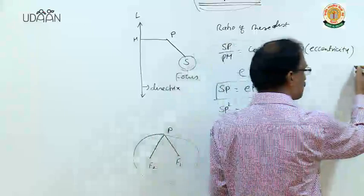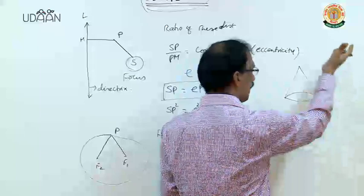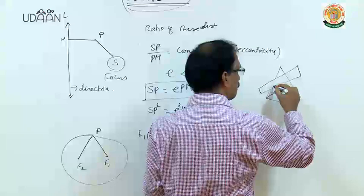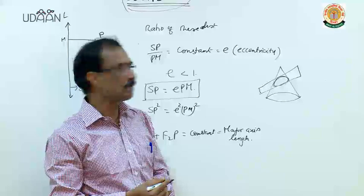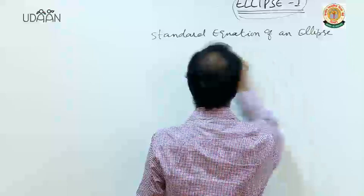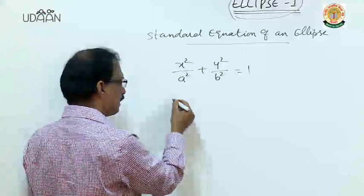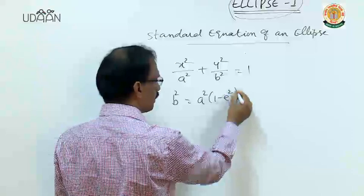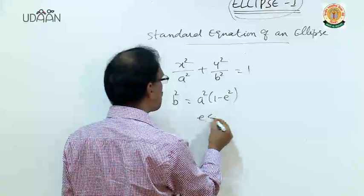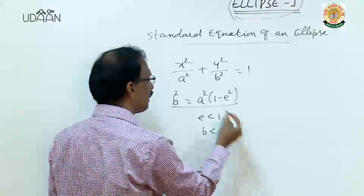So we got two definitions for ellipse. Normally, if you have a cone and a plane cutting it in a certain way, the cross-section you get represents an ellipse. Now let us see the standard equation of an ellipse. Since e is less than 1, from this we get b is less than a.